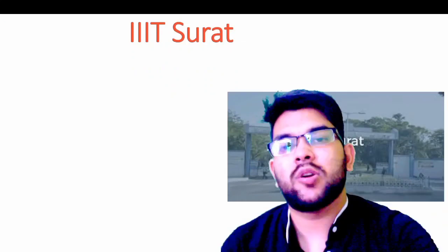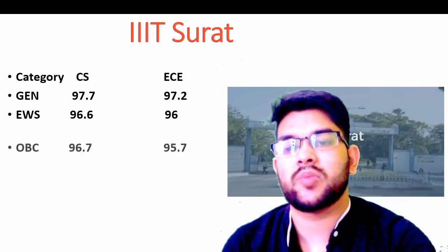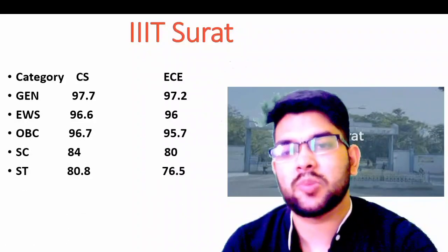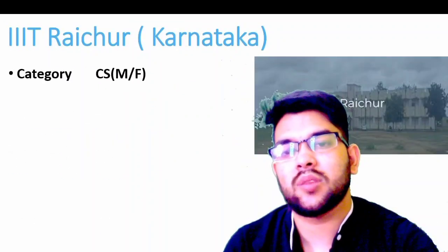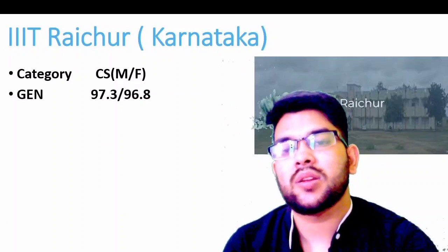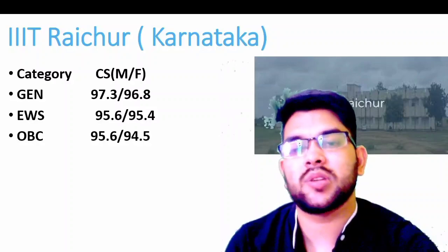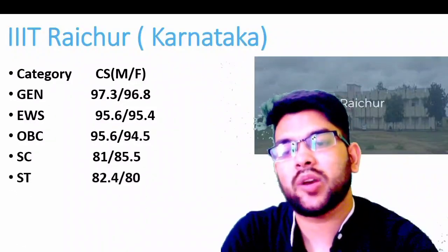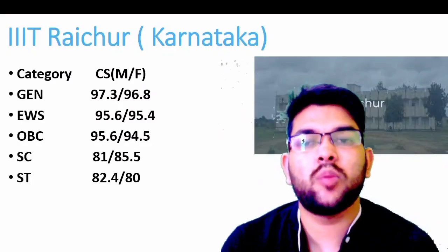For IIIT Surat: General — CS 97.7. EWS — 96.6. OBC — 96.7. SC — 84. ST — 80.8 percentile. For EC, check sidewise. For IIIT Raichur (Karnataka): General — CS male 97.3, female 96.8. EWS — male 95.6, female 95.4. OBC — male 95.6, female 95.4. SC — male 81, female 85.5. ST — male 82.4, female 80 percentile.